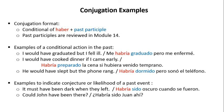Examples to indicate conjecture or likelihood of a past event are as follows. 'It must have been dark when they left' — Habría sido oscuro cuando se fueron. 'Could John have been there?' — ¿Habría sido Juan ahí?